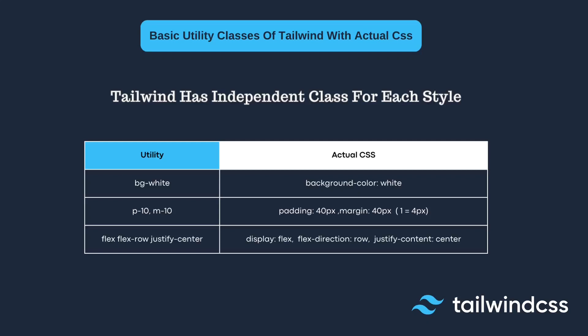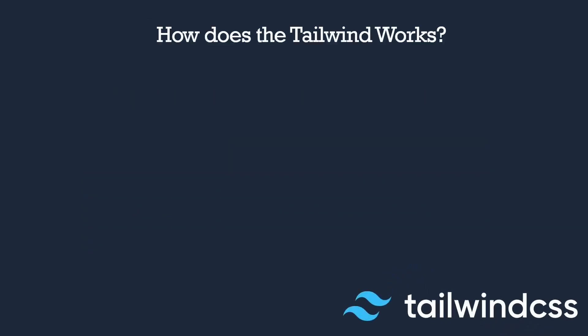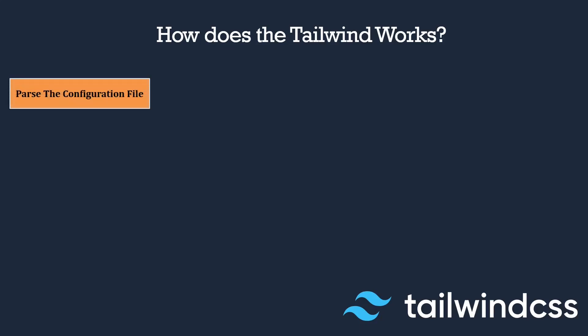We have seen the basic utility classes of Tailwind with the actual CSS. Now let's look at how Tailwind CSS works. When you define any class, the first thing it does is parse the configuration file — Tailwind reads your tailwind.config.js file to determine which utility classes to generate.